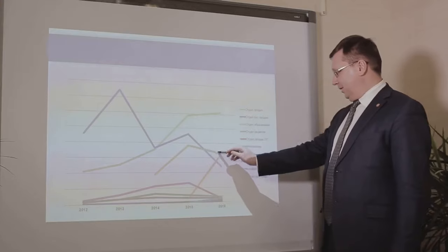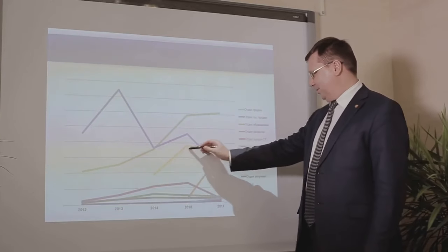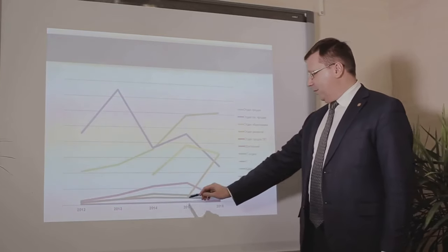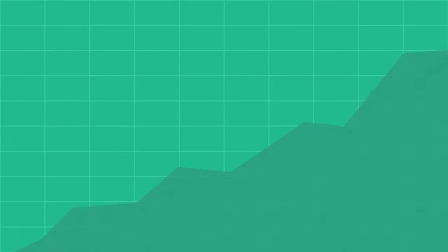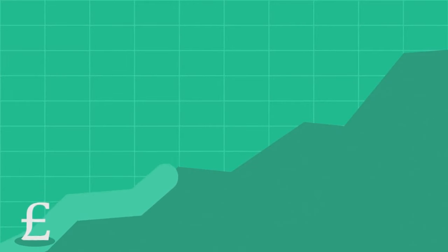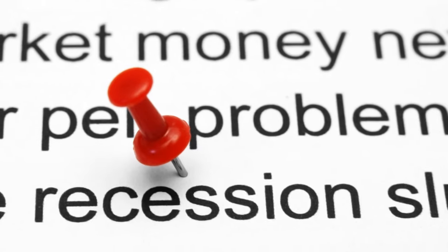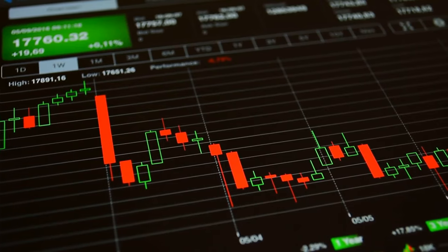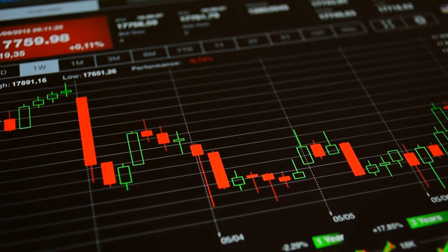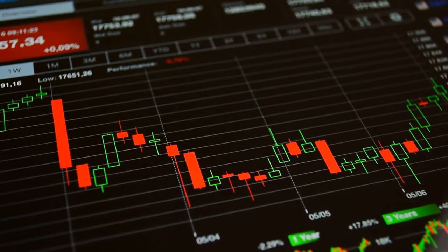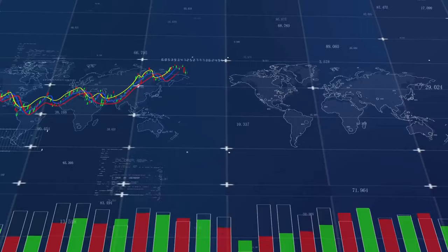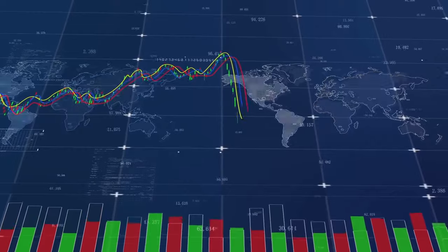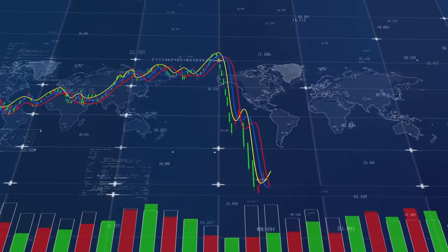As we moved into the 1990s, the UK experienced moderate economic growth, fueled by the burgeoning sectors of financial services and technology. The GDP growth rate averaged around 2 to 3% annually. It was a decade of relative stability, with the economy finding its footing after the tumultuous previous decades. However, the 90s were not without their share of challenges — the early part of the decade was marked by a recession, and the late 90s saw the Asian financial crisis ripple through the global economy. Yet the UK weathered these storms, demonstrating the resilience and adaptability of its economic structure.